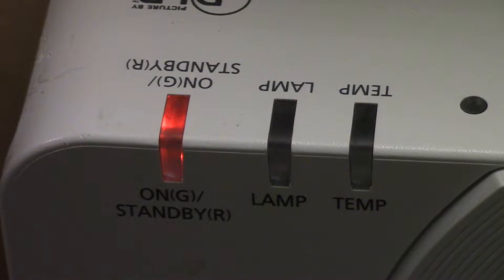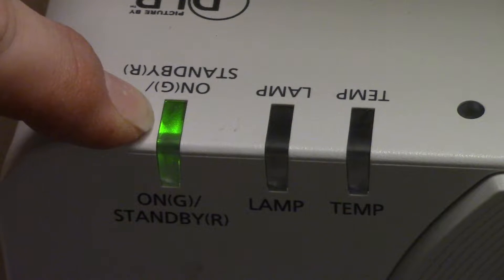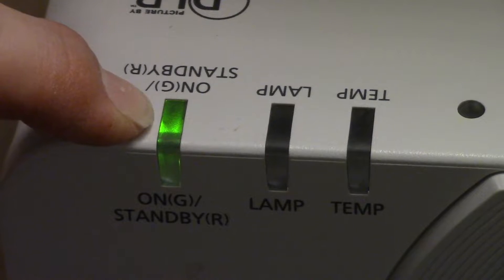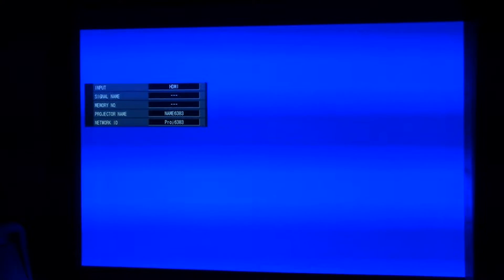Then I'll press power. That'll go green. Color wheel fires up. Lamp inside fires up. And now let's look at the picture. I don't have a signal plugged in, so let's get into the menu.